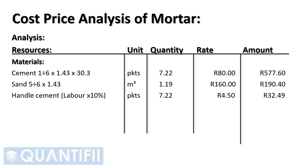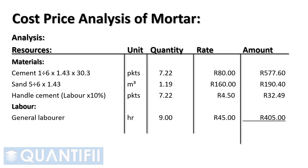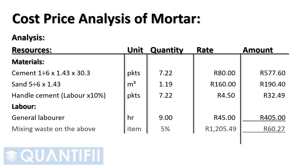For handling of cement, we will use the cost of a laborer per hour, multiplied by the number of pockets of cement required, multiplied by 10%. The laborer output is 1 cubic meter of mortar mixed per day, therefore 9 hours multiplied by the cost per hour equals 405 rand per cubic meter. Lastly, we can add 5% mixing waste to all the items above. This gives us our mortar cost of 1,265.76 rand per cubic meter of mortar.